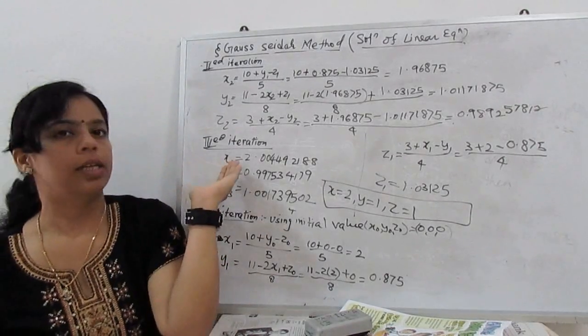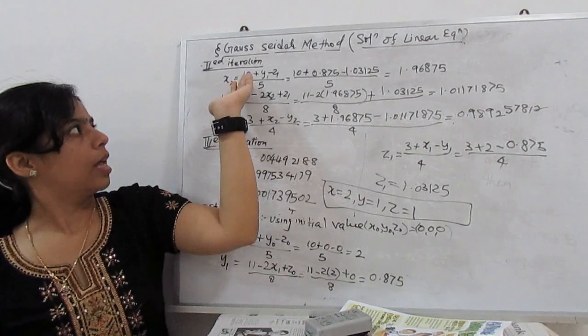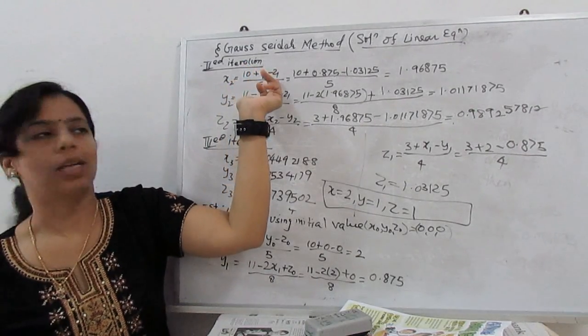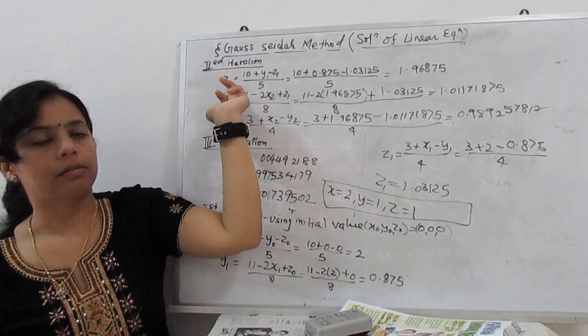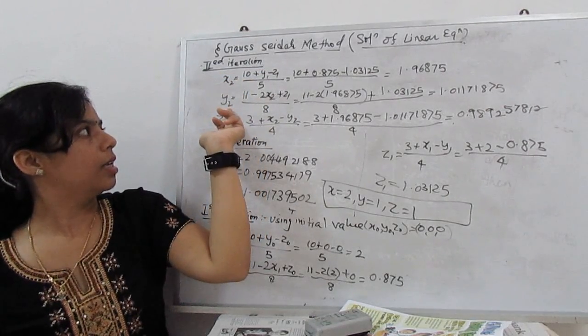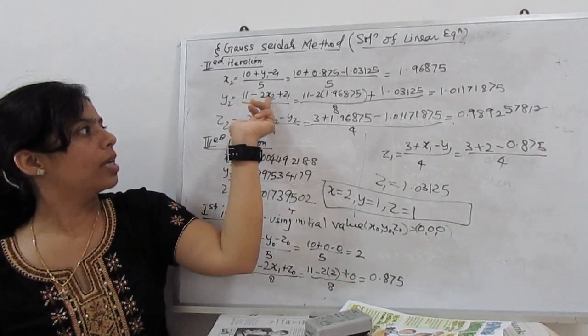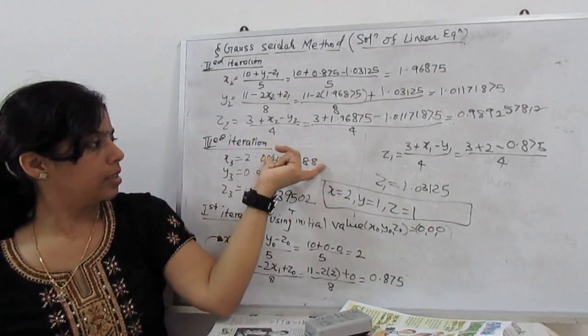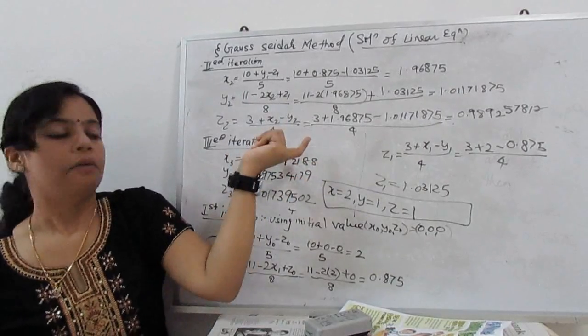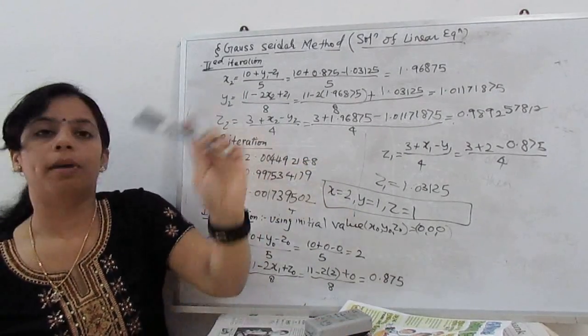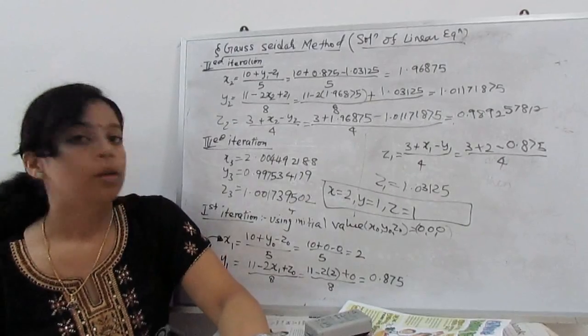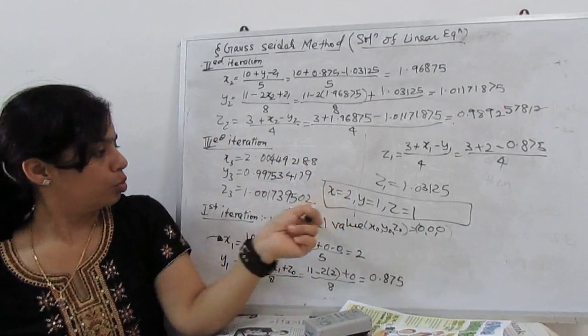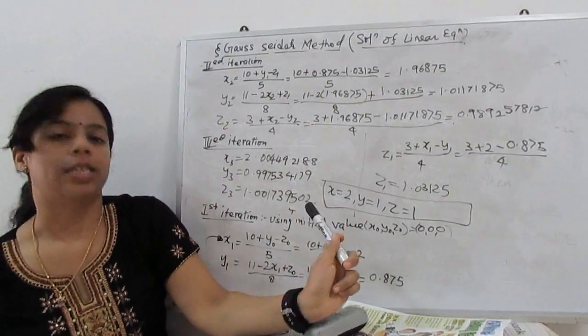For iteration 3, X3 is (10 + Y2 - Z2)/5. When X3 is coming, for Y3: (11 - 2X3 + Z2)/8. My X3 is this, then Y3 is this. When X3 and Y3 both values come, then both values we use for the new iteration for Z3.